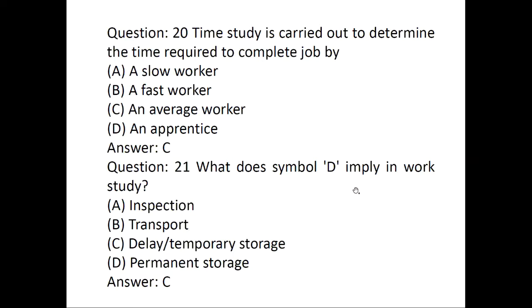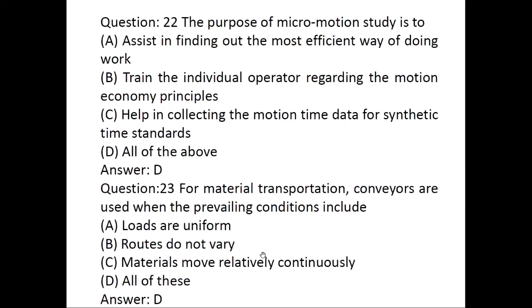The symbol D implies in work study: delay or temporary storage. This is the answer. The purpose of micromotion study is to assist in finding out the most efficient way of doing work, train the individual operator regarding the motion economy principles, and help in collecting the motion time data for synthetic time standards. These are all the micromotion study's purposes. The answer is all of the above.